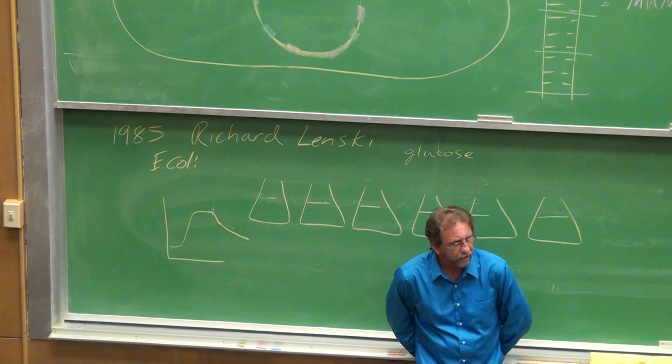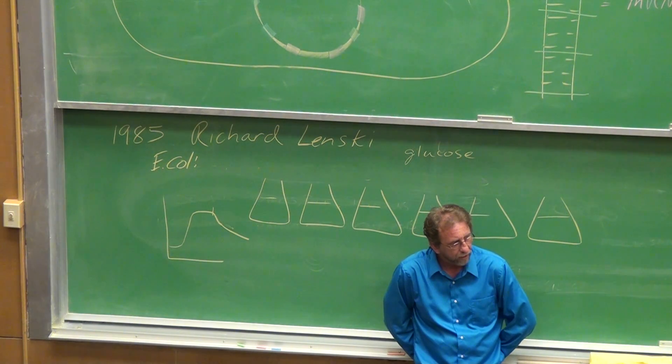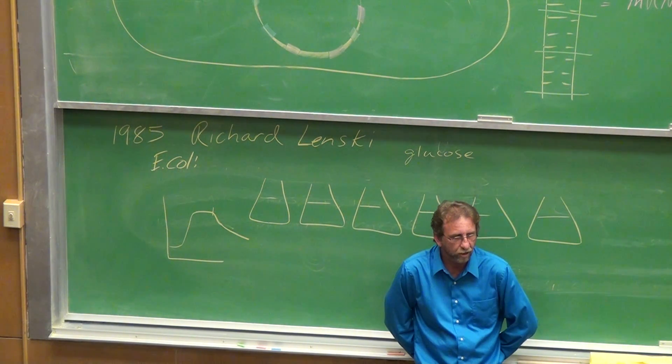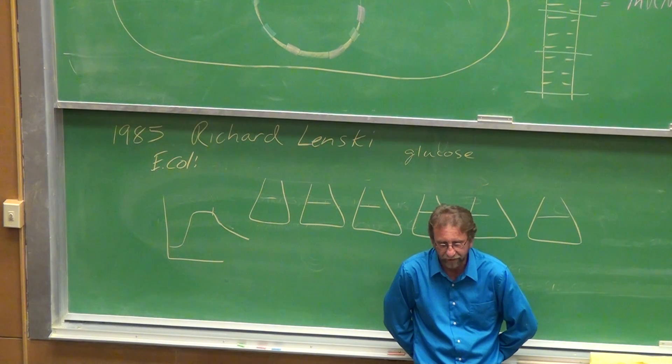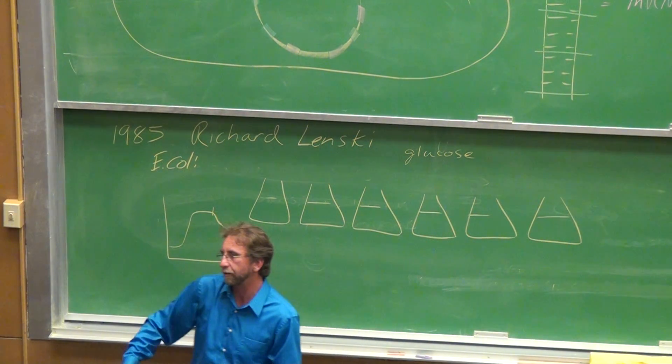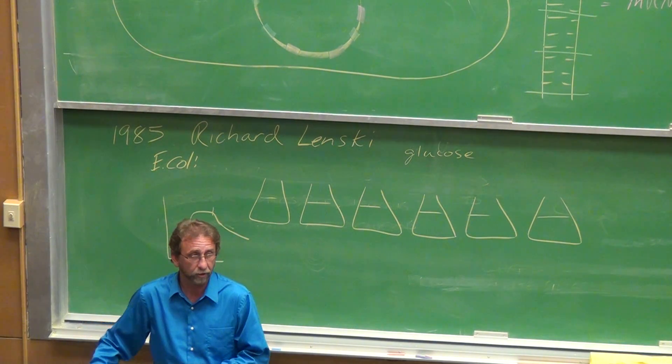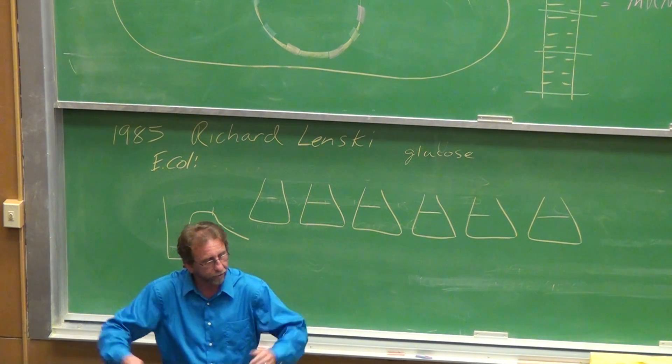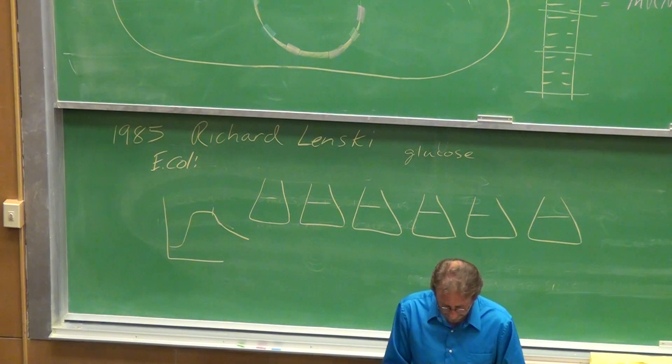He got about six to seven generations a day, equal to about 45,000 generations over the time of the study. That's equal to about a million years of human evolution. So he's looking at about a million years of time for evolution.